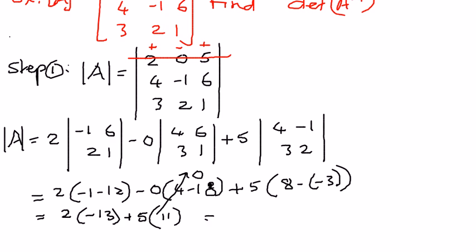When we simplify this further, 2 times -13 is -26, and 5 times 11 is 55. Therefore the value is -26 plus 55, which is positive 29. Therefore the determinant of matrix A equals 29.